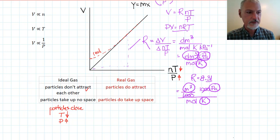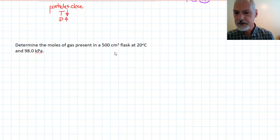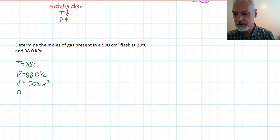Let's use the ideal gas law in a couple of situations right now. Let's determine the moles of gas present in a 500 cubic centimeter flask at 20 degrees Celsius. So, let's see what information I've got. Temperature, 20 degrees Celsius. Pressure, 98 kilopascals. And I've got a volume, 500 cubic centimeters.